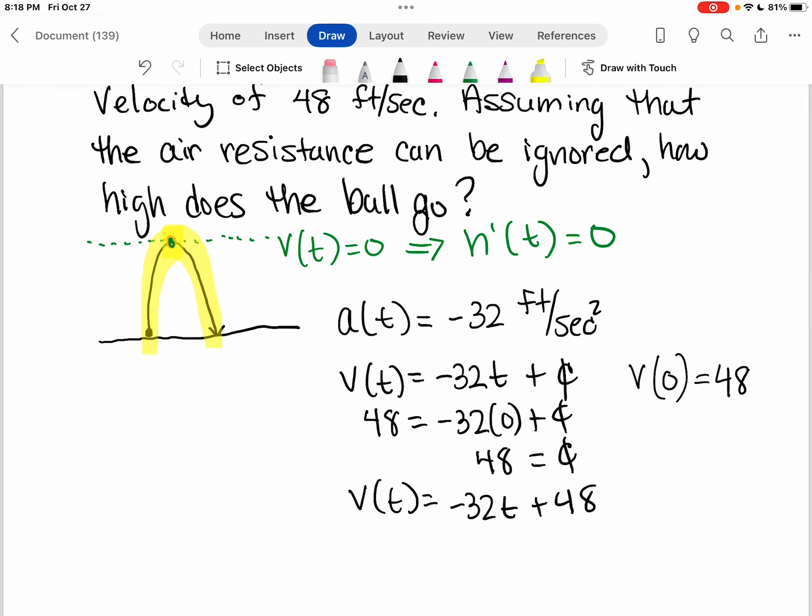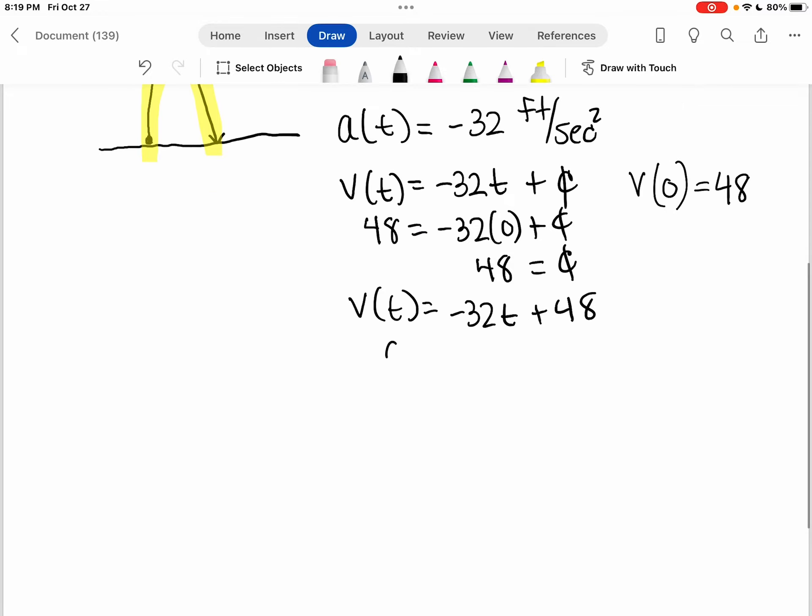Okay, so now what we want to do, like we set up here, if I want to find the time that that ball gets to the top and hits that maximum height, I want to find the value of T when the velocity is zero. So I'm going to set this equal to zero and solve for T. When I do that, I'm going to get that T is 1.5 seconds.